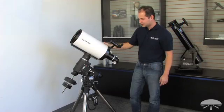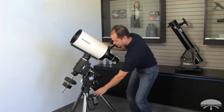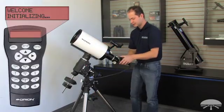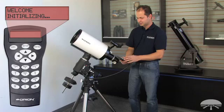Alright, so next we're going to go through the alignment procedure. Turn the mount on, the hand controller becomes active. And just follow the on-screen display.